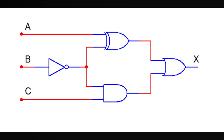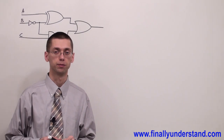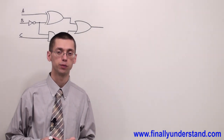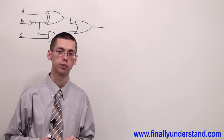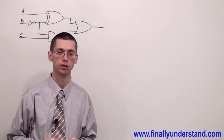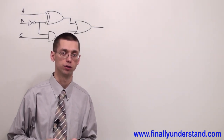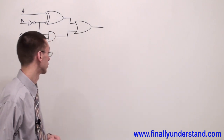Let's take a look at this example. We're supposed to find the truth table. A truth table means we have to find all possible output conditions for this circuit.